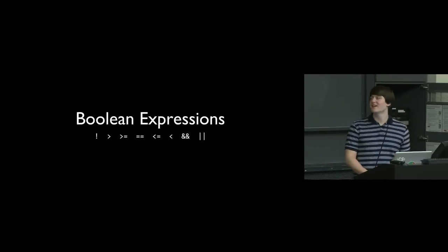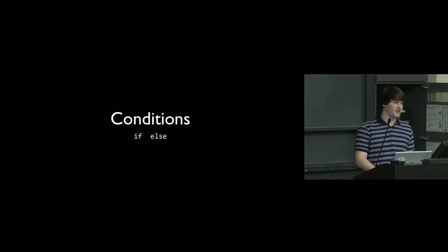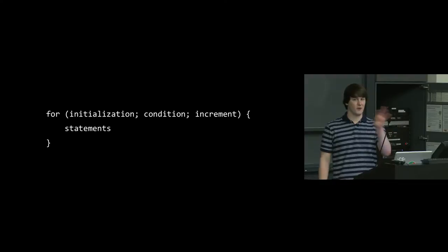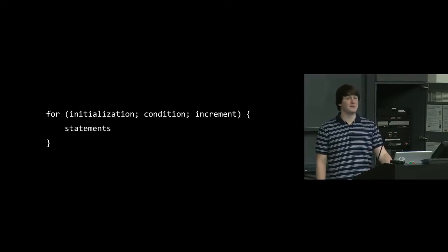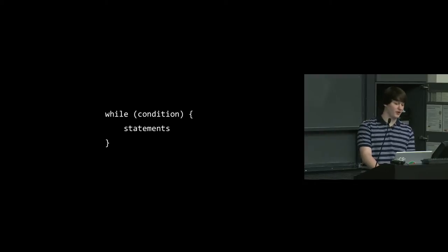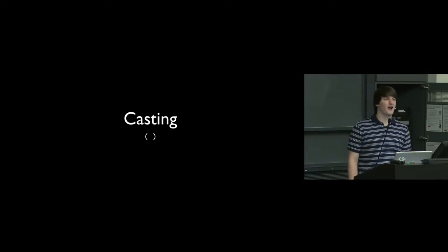Boolean expressions — the very simple ones that you should all be used to at this point. Conditions: we have our regular if-else's. Loops: we have for loops. In JavaScript you also have the for-in — you'll also see that in Objective-C, but regular C does not have that. We have a regular for loop, regular while loop, regular do-while. And all of those will still be usable in Objective-C.